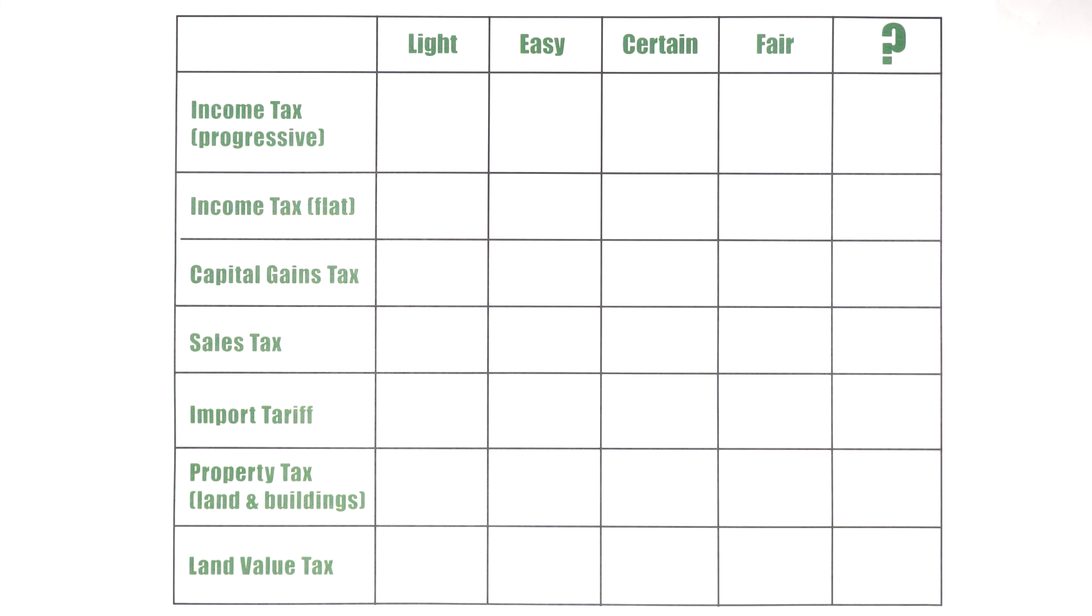So let's go here. The progressive income tax. Now assuming it really is progressive, which means it does take a higher portion from people who have a higher income. Is it light on production? Well, it does add to the cost of goods. However, it takes more income from people who have more money and therefore it's somewhat light on production. So maybe we'll give it a three there.